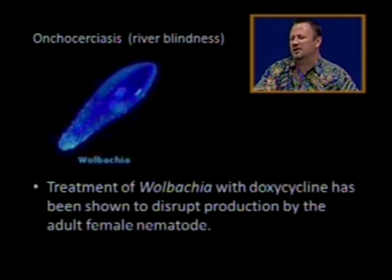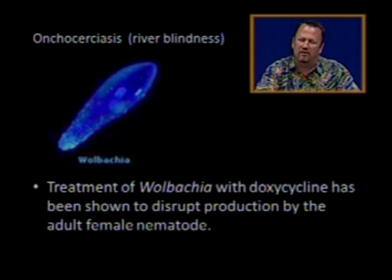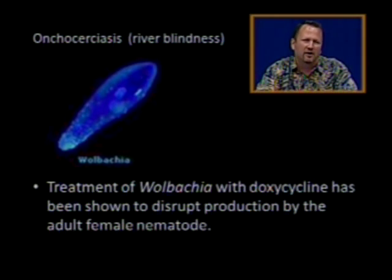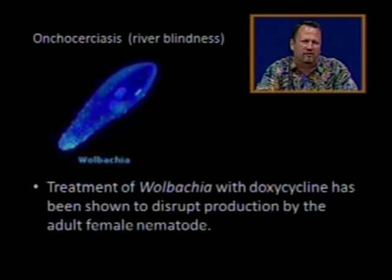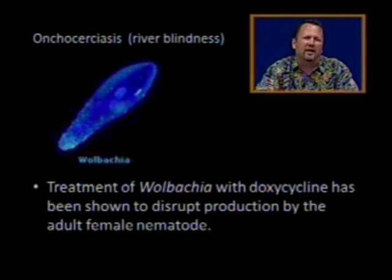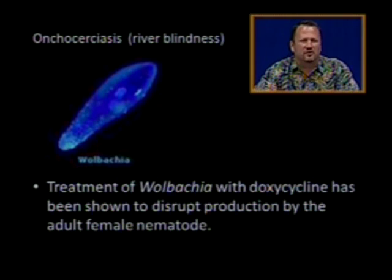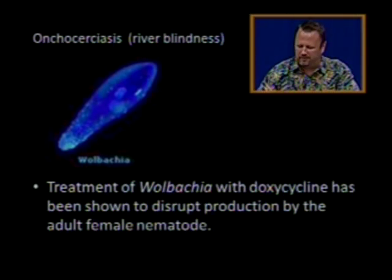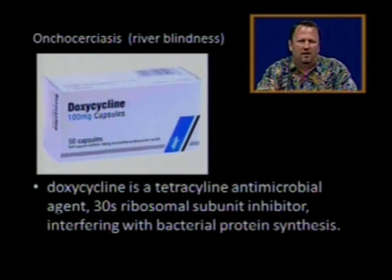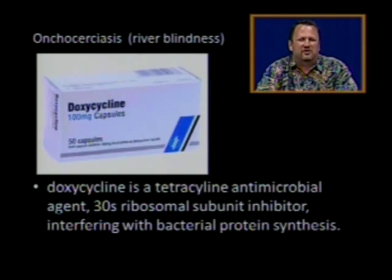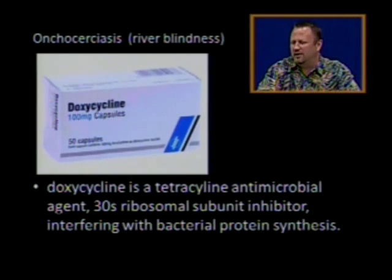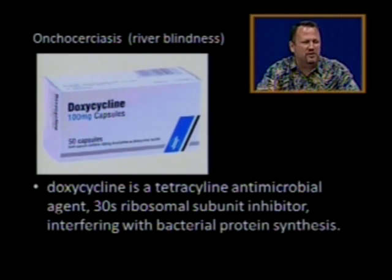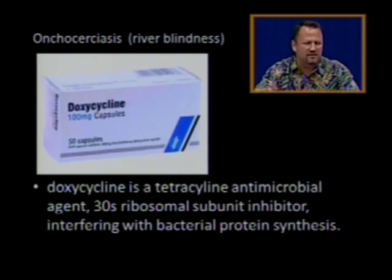Treatment of Wolbachia with doxycycline has been shown to disrupt production by the adult female nematode — the adult female worm relies on these bacteria for normal physiology, and treating the bacteria interferes with the worm's ability to reproduce. Doxycycline is a tetracycline antimicrobial agent and a 30S ribosomal subunit inhibitor. Ribosomes decode messenger RNA to manufacture proteins, so by interfering with ribosomes we interfere with bacterial protein synthesis.